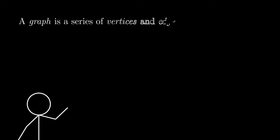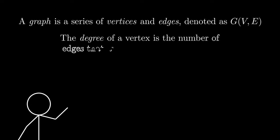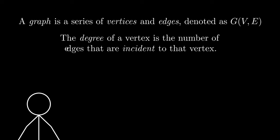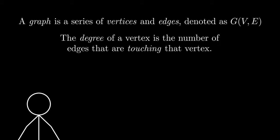Generally speaking, a graph is a series of vertices and edges, denoted as G(V, E). The degree of a vertex is the number of edges that are incident to that vertex. In other words, the degree of a vertex is just the number of edges that are touching that vertex.